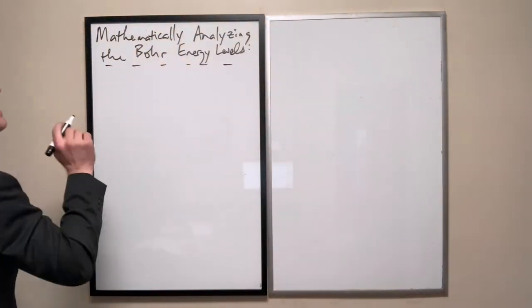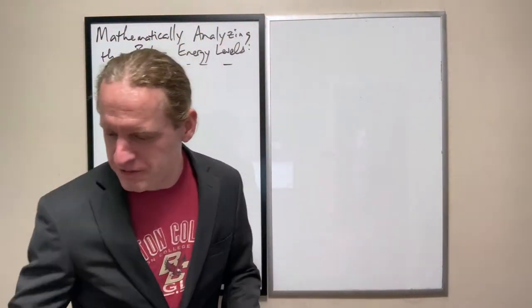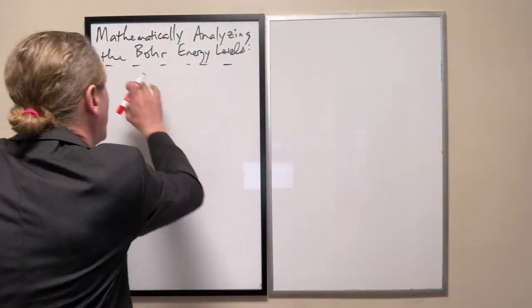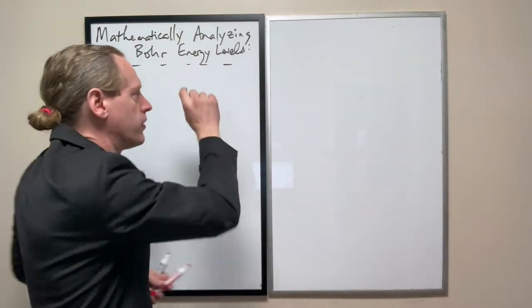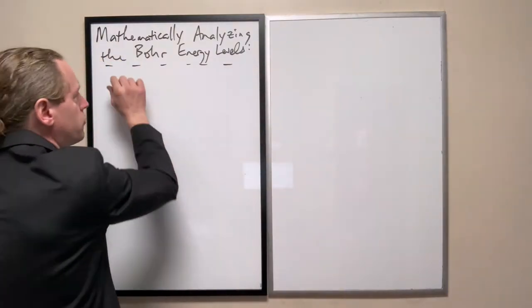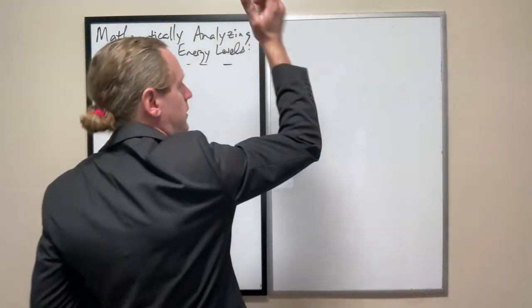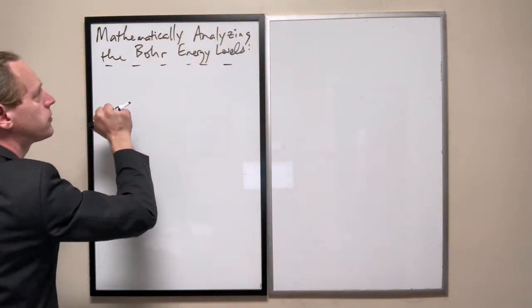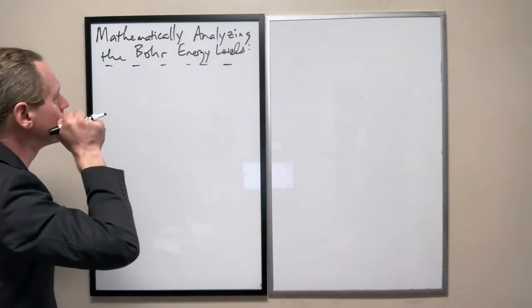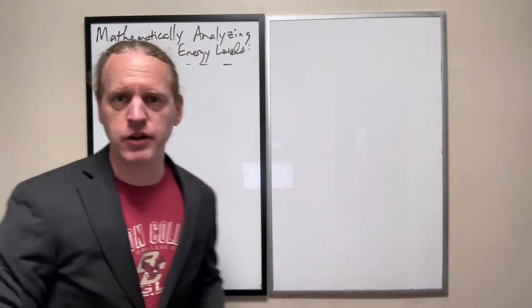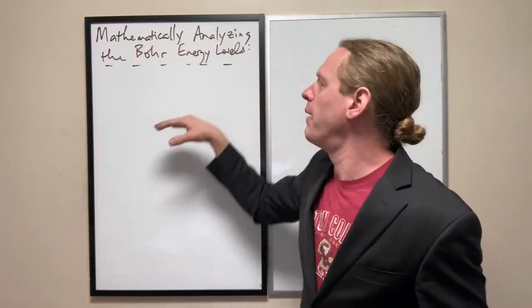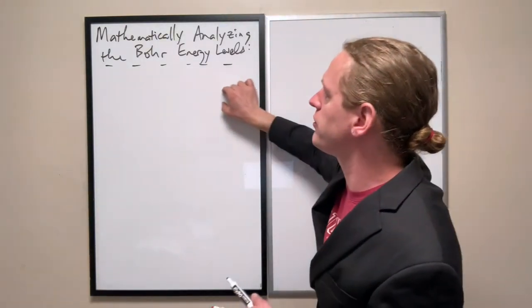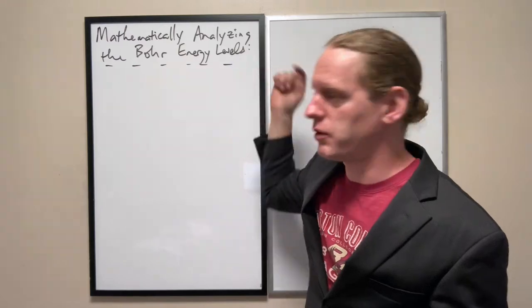So anyway, I'm going to try to, in red, number or letter the equations because there will be times when I'll say we're going to use equation 3 with equation 4 to get equation 6 or whatever. And for sake of space, just because I have limited blackboard space, I'm going to describe in words why each one is true. I would like to write why each is true, but I'm just going to say it in words instead.